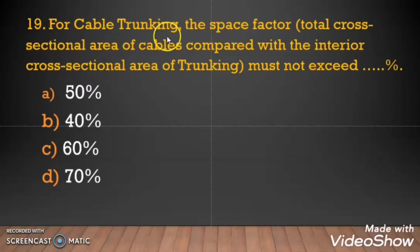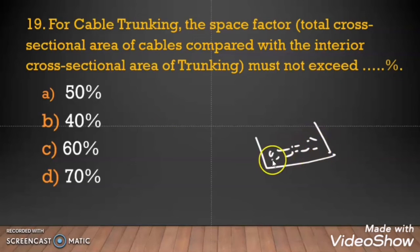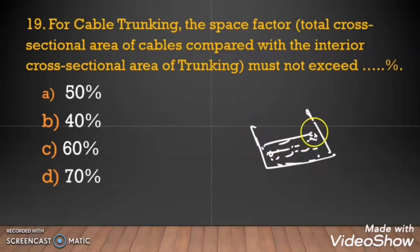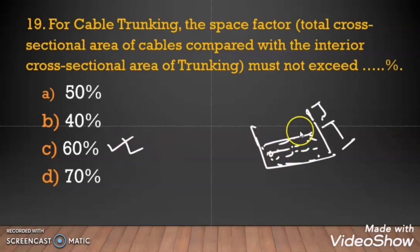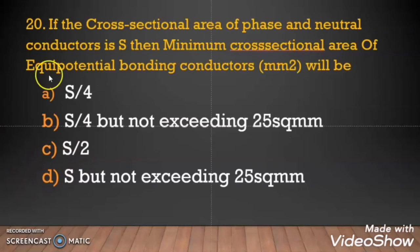Question 19: For cable trunking, the space factor — the total cross section area of the cables compared with the internal cross section area of the trunking — must not exceed? The question asks how full the trunking can be. The correct answer is 60%. Maximum allowed cables in the trunking is 60% full, and 40% should be empty. So the answer is 60%, option C.